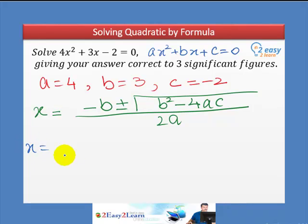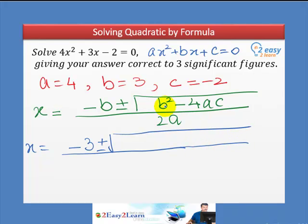So x = -b, and the value of b is 3, plus minus √(b², and the value of b is 3, so 3² - 4 times a, and the value of a is 4, and the value of c is -2) divided by 2a, and the value of a is 4. So after placing the right values in the formula...